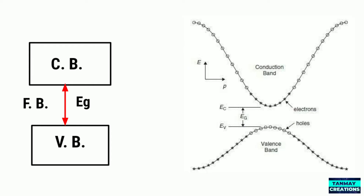You can choose the X-axis to be either momentum or the wave vector K, because P equals h-bar times K. Along the Y-axis we have chosen energy E. In this diagram you can note a few things.